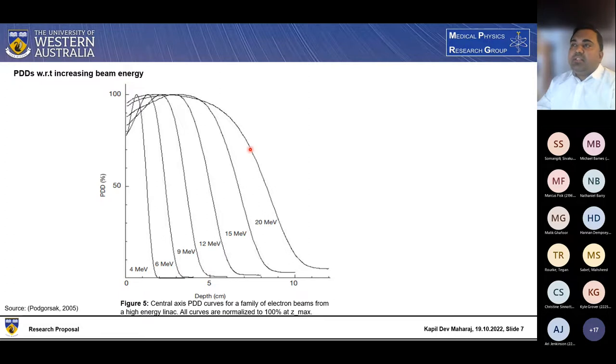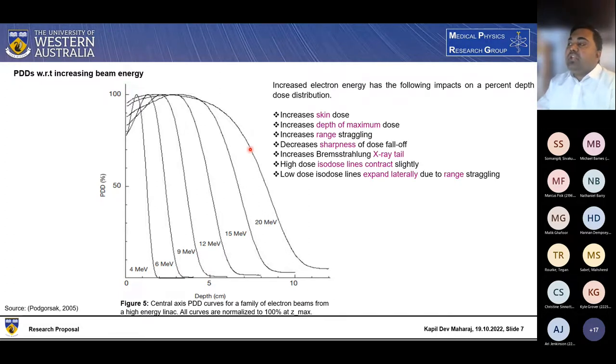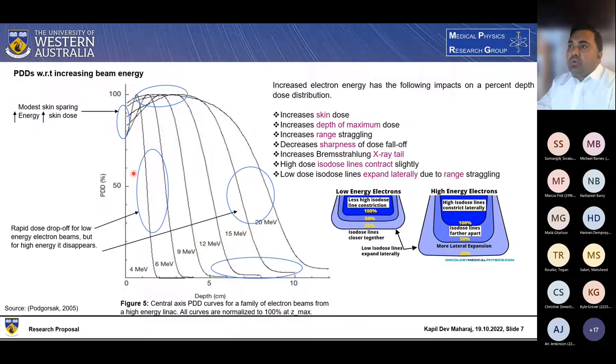So percentage depth dose with respect to increasing beam energy. Increasing electron energy has the following impact on percentage depth dose. Number one is increases the skin dose. So as energy increases, the electron skin surface dose also gets increased. Increased depth for maximum dose. Increased range of straggling as you can see in this figure. Decreased sharpness. For low electron energy, you can see the sharp drop of electron beam. However, for the higher energy beam, this sharpness becomes disappear. Increasing Bremsstrahlung x-rays is also because of the penetration, more penetration, more photons will appear which cause the more Bremsstrahlung x-ray strain with increasing electron energy. High dose isodose line contracts slightly. Low dose isodose line expands laterally due to the range directly as you can see in this picture.